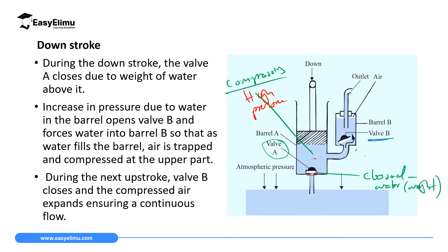Valve B was closed due to the air above it, but the force or pressure caused by that air is very small. So the water at very high pressure will force valve B to open. When valve B opens, water flows through to barrel B and you collect your water there. During the next upstroke, the space in barrel A expands, pressure is very low, and the water inside barrel B closes valve B.